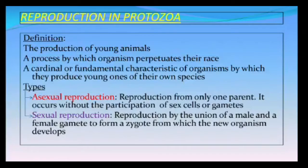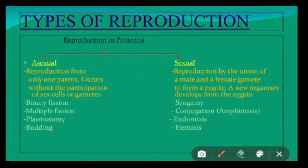Whereas in sexual reproduction, this reproduction takes place by the union of male and female gametes to form a zygote, and this zygote undergoes development to form a new individual. Sexual reproduction can again be of many types: syngamy, conjugation, endomixis, and hemixis.